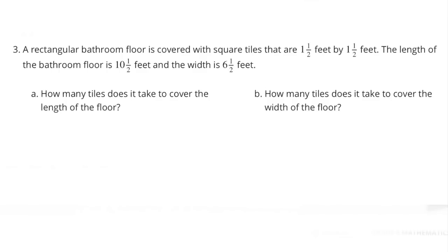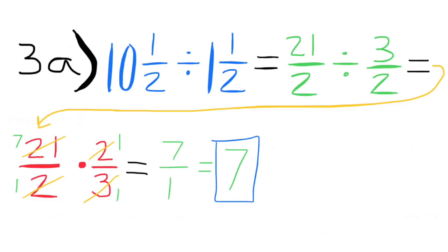Number three: a rectangular bathroom floor is covered with square tiles that are one and a half feet by one and a half feet. The length of the bathroom floor is ten and a half feet and the width is six and a half feet. Part a: how many tiles does it take to cover the length of the floor? The length of the bathroom floor divided by the length of the tiles is ten and a half divided by one and a half.